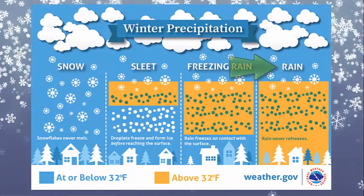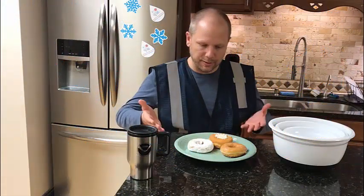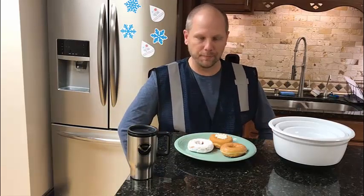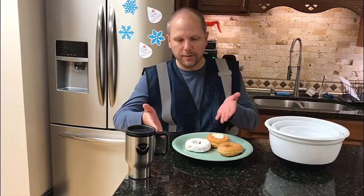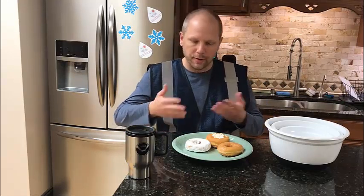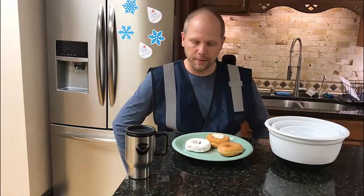One of course is rain, but what I have here are these delicious donuts to represent frozen precipitation that we sometimes see here in South Carolina and Georgia as well. The first frozen precipitation type I'd like to discuss is snowfall, which is represented by this powdered sugar donut right here. Nice white, looks fluffy.